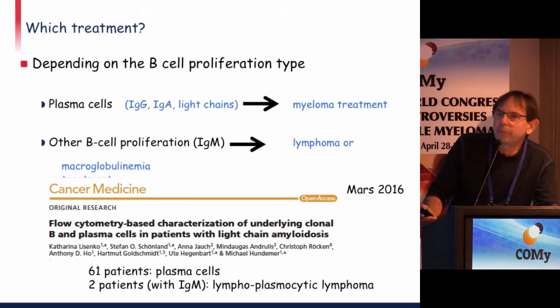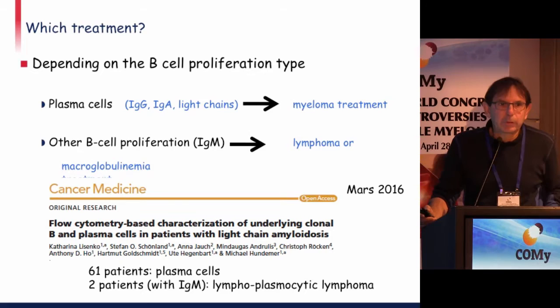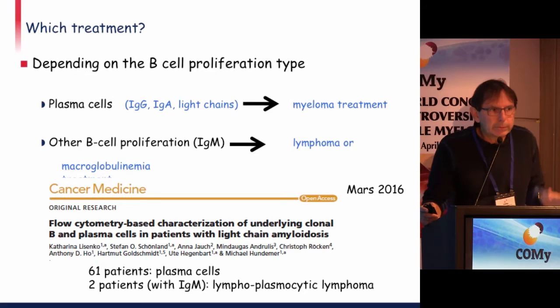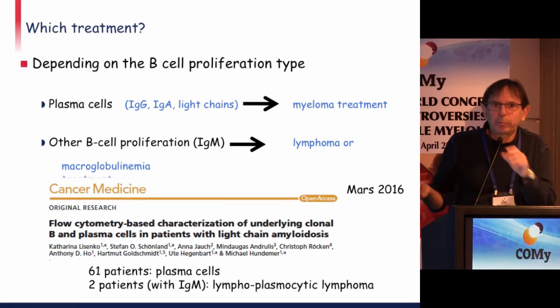Once the diagnosis is made and amyloidosis typed, treatment depends on the B-cell proliferation type. If it's plasma cell driven, a myeloma-type treatment is indicated; if there is other B-cell proliferation with IgM, lymphoma or Waldenström's macroglobulinemia treatments are used. Flow cytometry, as indicated in the literature, can help characterize the cells responsible for free light chain production.